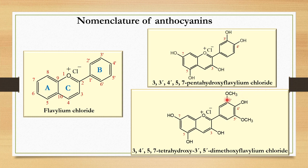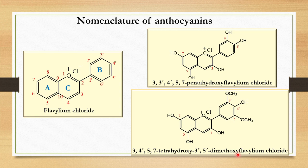Instead of hydroxyl, if we have methoxy at any of the positions — like hydroxyls at 3, 5, 7, and 4-dash positions and two methoxyls at 3-dash and 5-dash positions — we name it as 3, 4-dash, 5, 7 tetrahydroxy, 3-dash, 5-dash dimethoxy flavylium chloride. You can notice that we follow normal IUPAC nomenclature, where hydroxy comes first alphabetically before methoxy, which starts with M. So this was the nomenclature of anthocyanins.